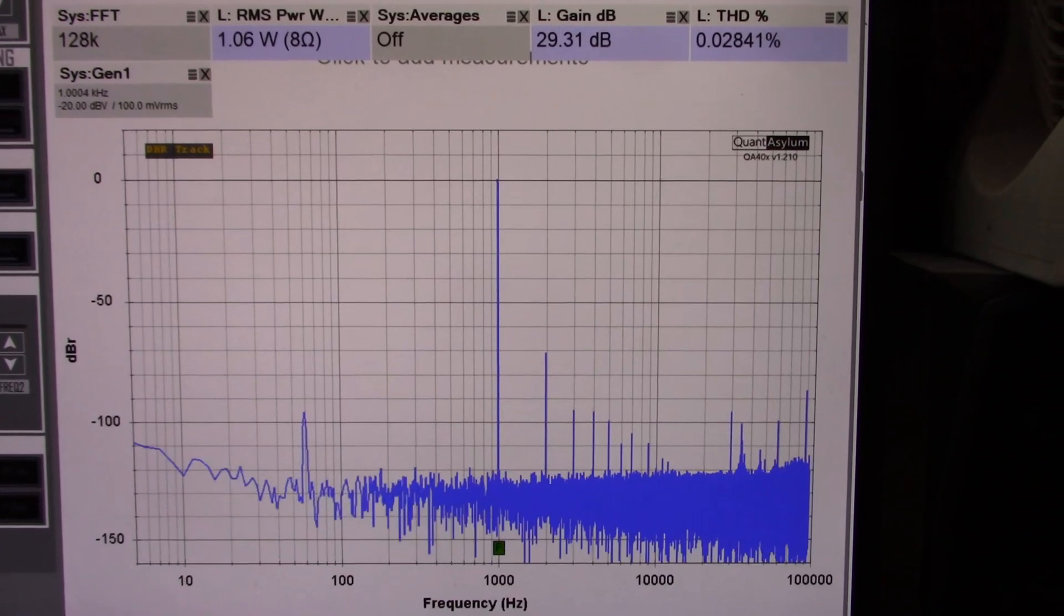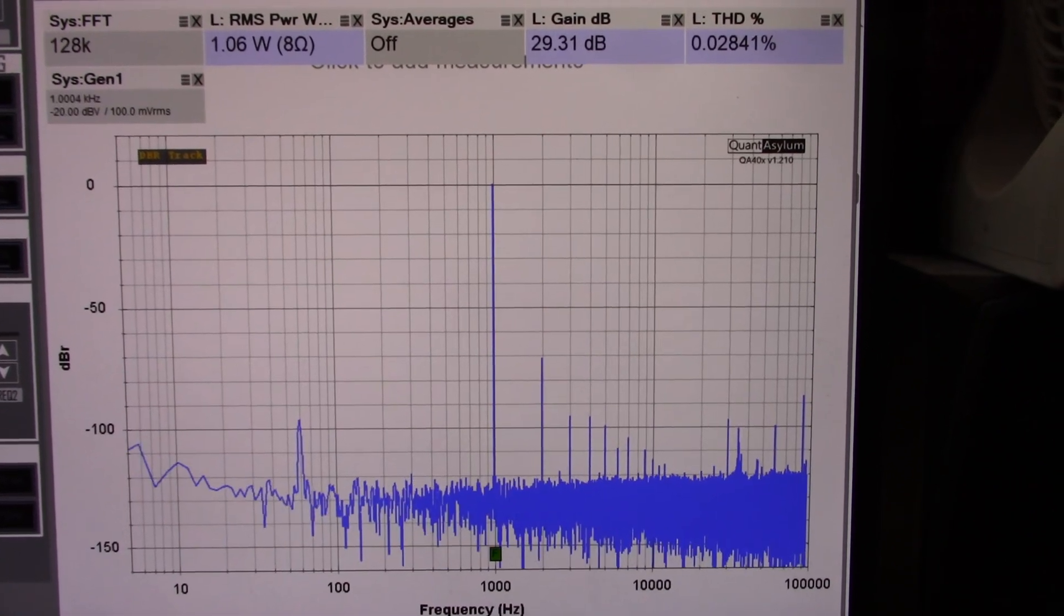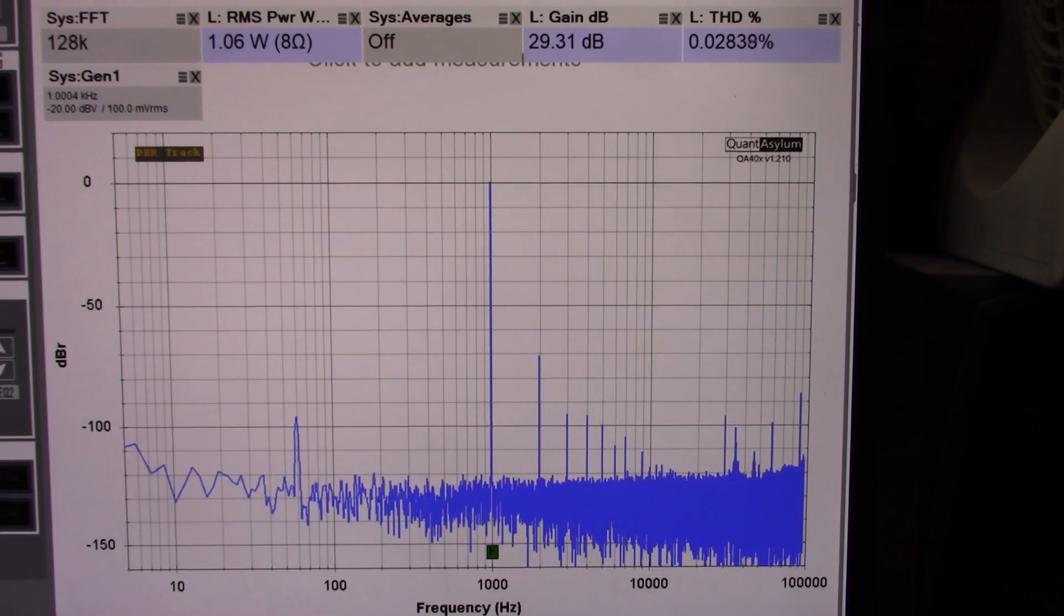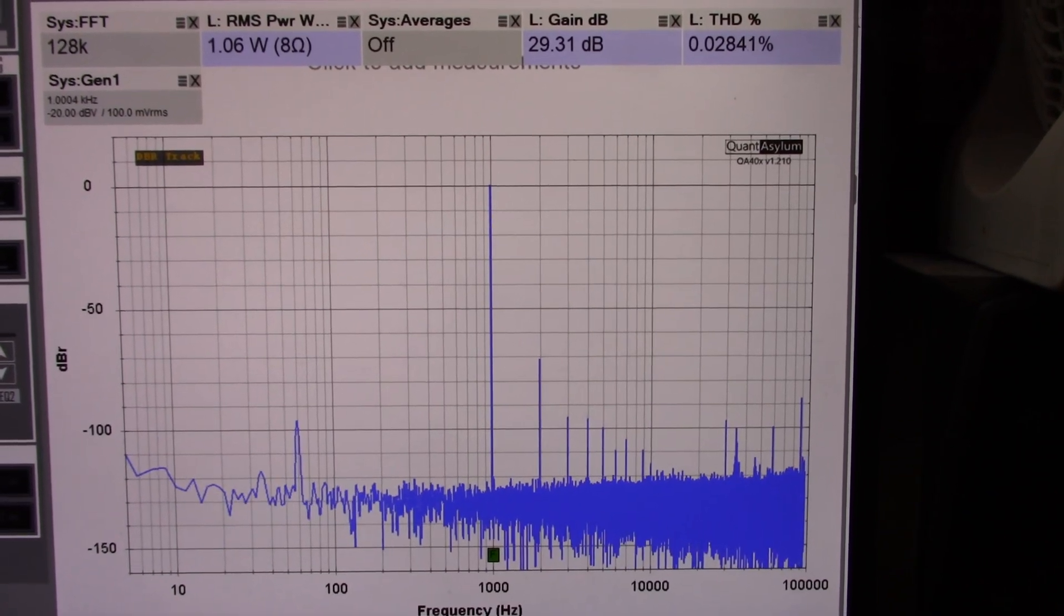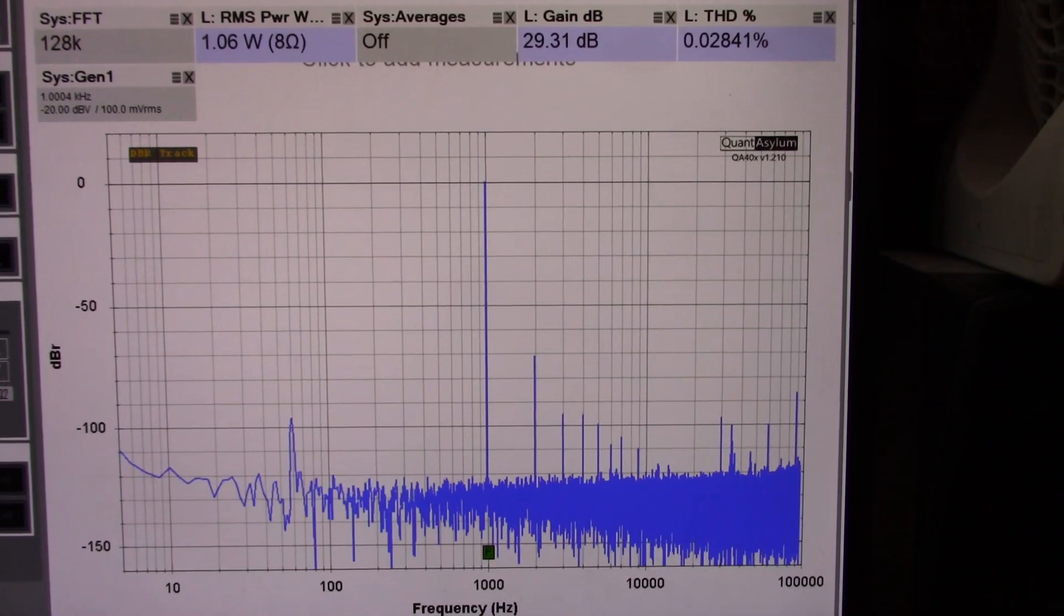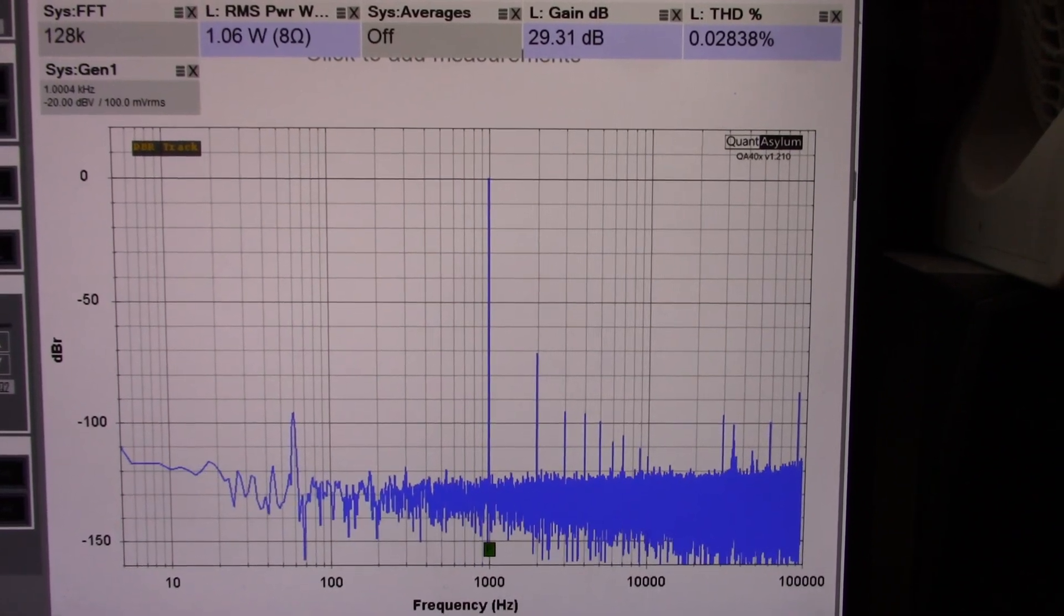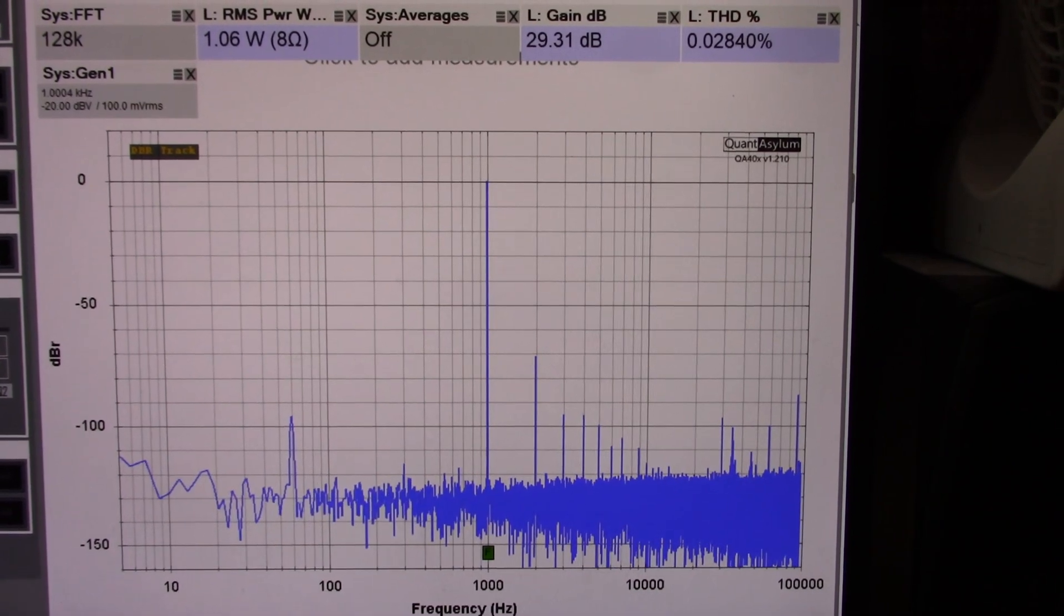To be honest, I was hoping to see lower distortion like the incredible TDA 2050. It's an order of magnitude lower than this. I was thinking maybe they use similar circuitry inside the chip that they use in the 2050, but apparently not, because this is measuring a little bit higher.